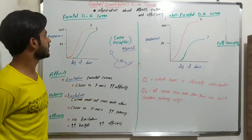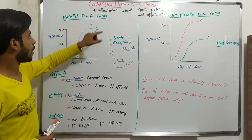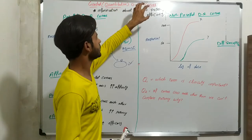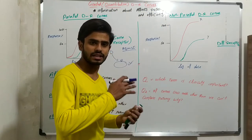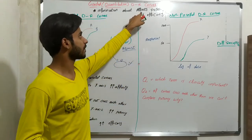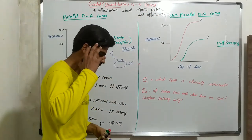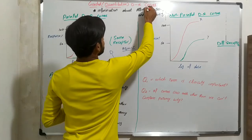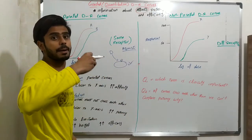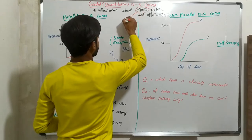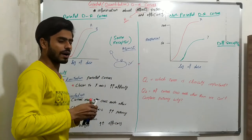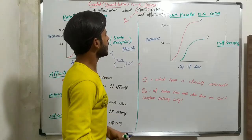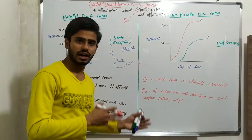These curves give us information about affinity, potency, and efficacy — three terms we discussed in the previous lecture. Affinity is the ability of a drug to bind to receptors — the greater or lesser ability to bind. Potency is the amount or concentration of the drug that gives its response.